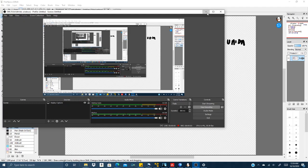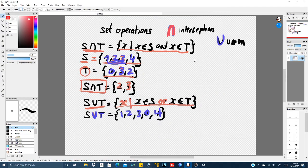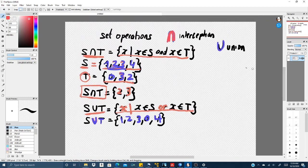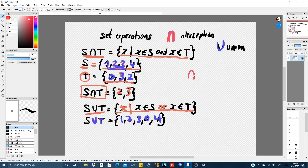Okay, today I'm going to talk about set operations. Right here we have two types of set operations: we have the intersection and then we have the union operation.